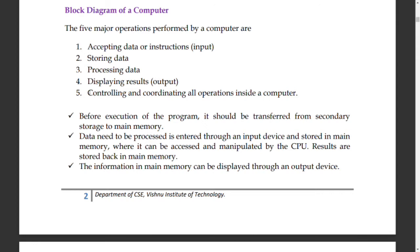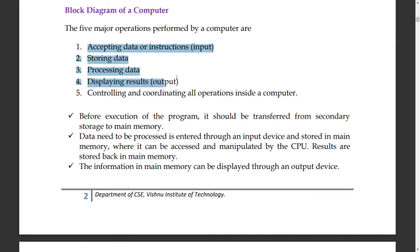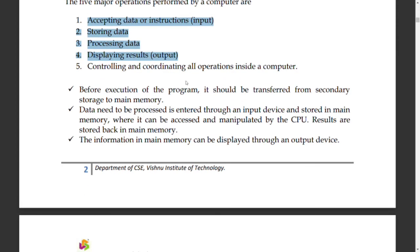Before execution of the program, it should be transferred from secondary memory to the main memory. After that transfer, the input is stored in RAM, then execution and processing happen, and finally the output is managed.